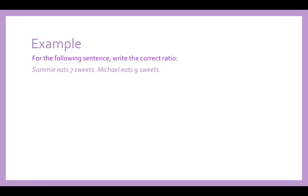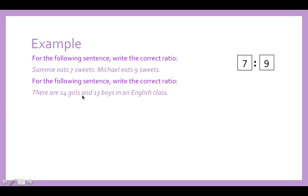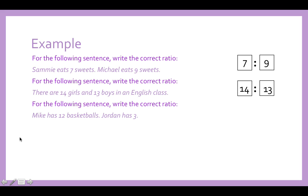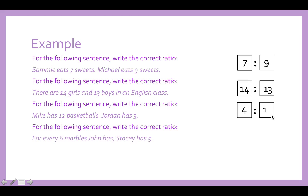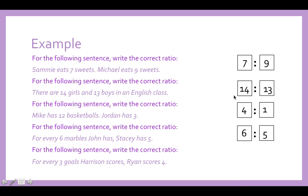Here are some examples. For the sentence 'Sammy eats seven sweets, Michael eats nine,' you'd write seven to nine. There are 14 girls and 13 boys — write 14 to 13. Mike has 12 basketballs, Jordan has three — this is 12 to 3, but simplified to four to one. For every six marbles John has, Stacey has five — write six to five. For every three goals Harrison scores, Ryan scores four — write three to four.